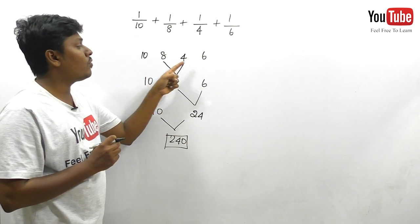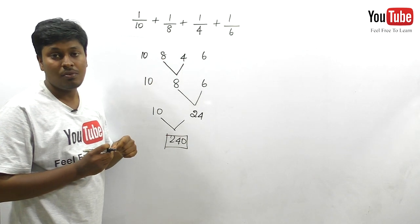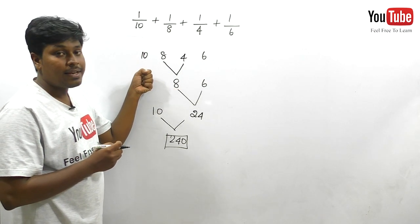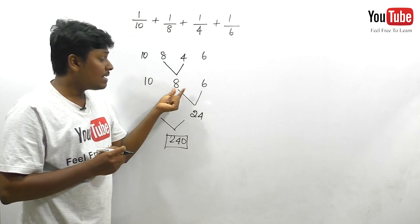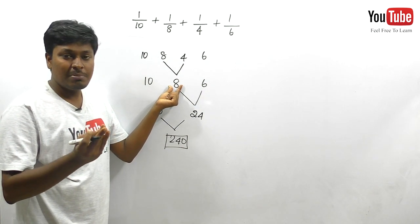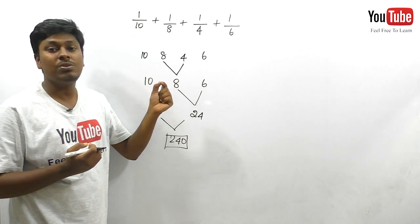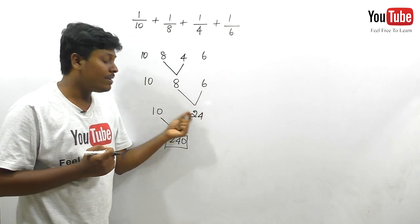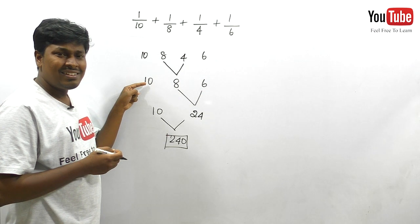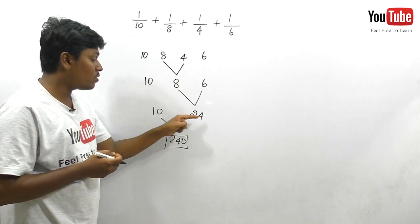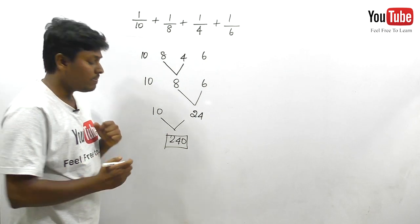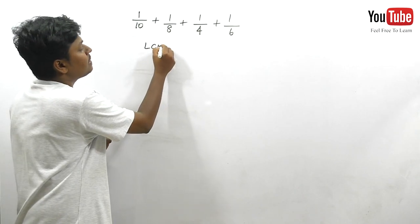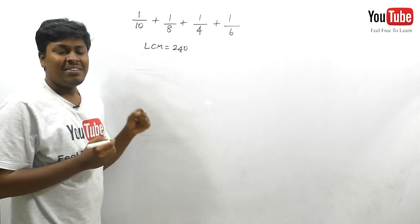To recap: for 10, 8, 4, 6 — I first targeted 8 and 4 and got LCM = 8. Remaining numbers: 10 and 6. Not bothering about 10, I targeted only 8 and 6. The larger value is 8. Rules 1 and 2 fail, but rule 3 gives 8 × 3 = 24, which is divisible by 6. So LCM of 8 and 6 is 24. Keeping 10 as it is: 24 × 10 = 240 is the LCM.